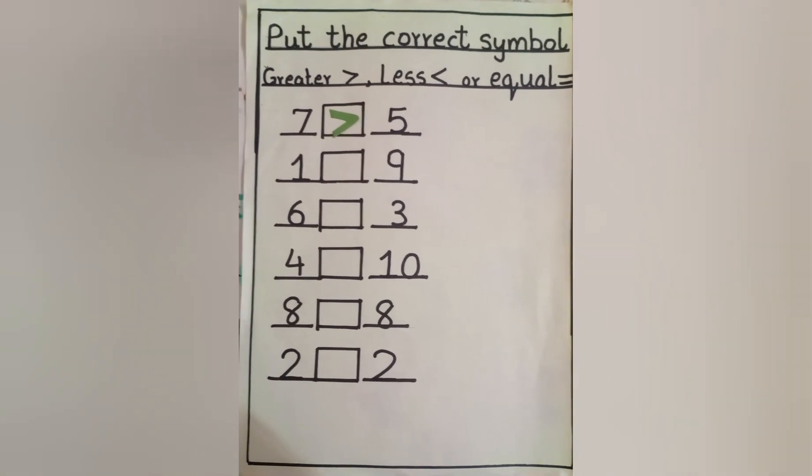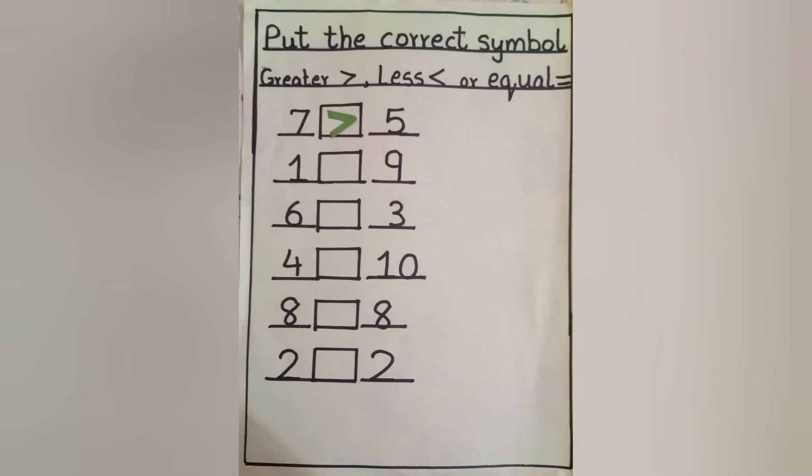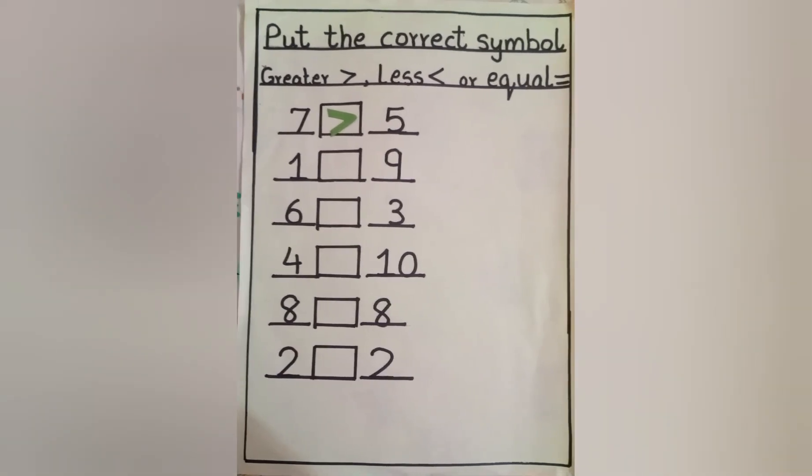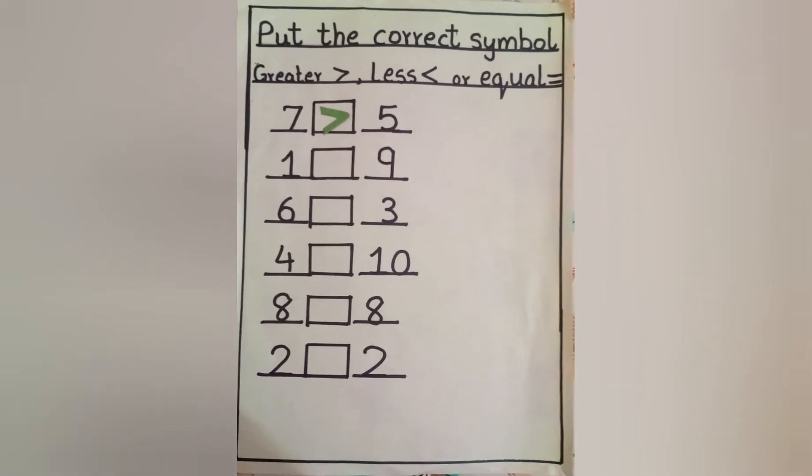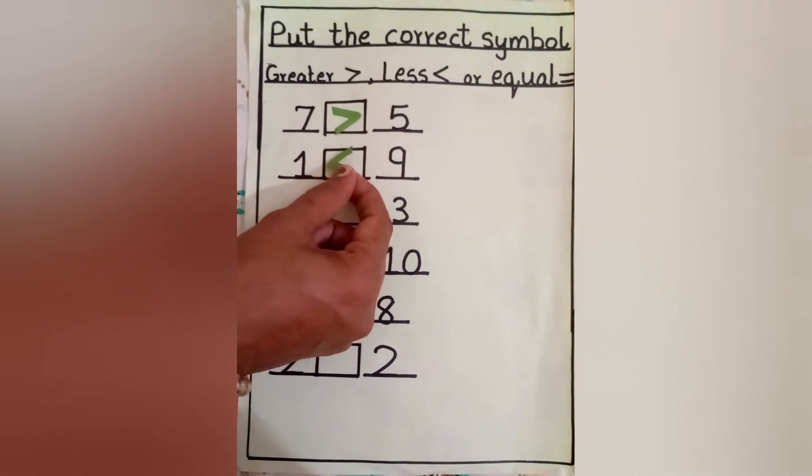Next number. One number is bigger or nine number is bigger? Yes, nine number is bigger number. Now crocodile will eat number nine. Yum yum yum. Tasty.